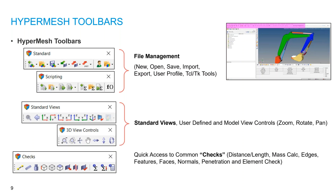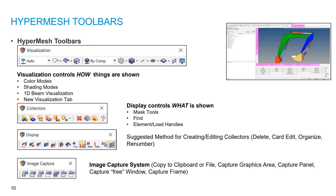The HyperMesh toolbar includes file management options: File Open, Save, Import, and Export. Next are view options like XY, YZ, and ZX isometric views. You can also view the geometry or component, view the collector, and control the display.